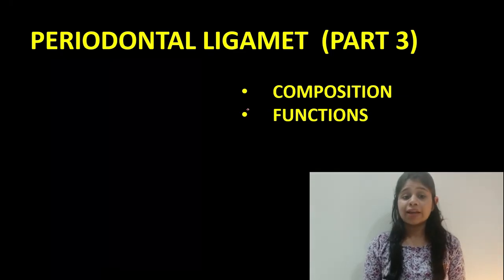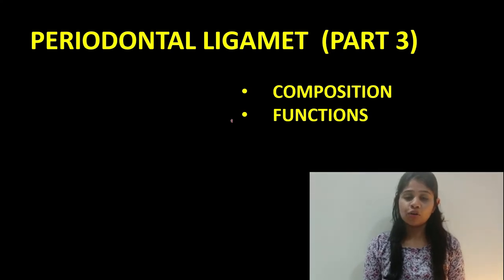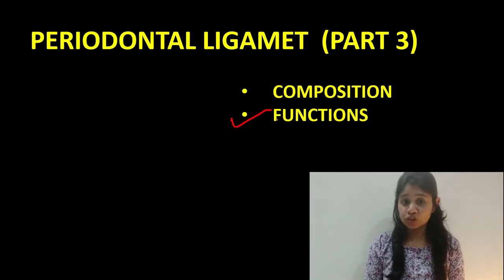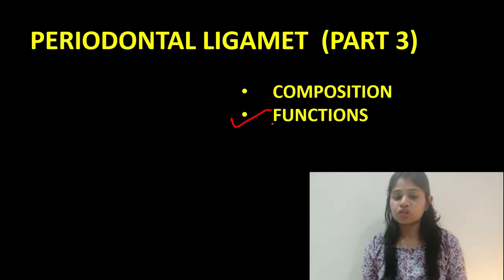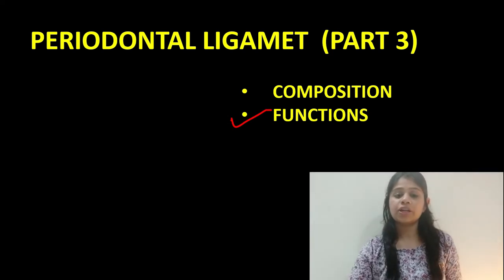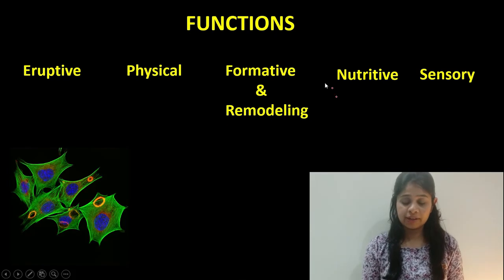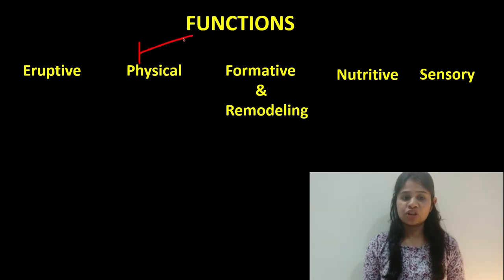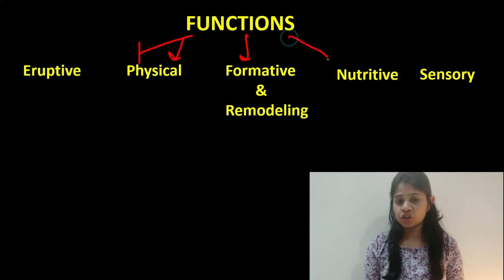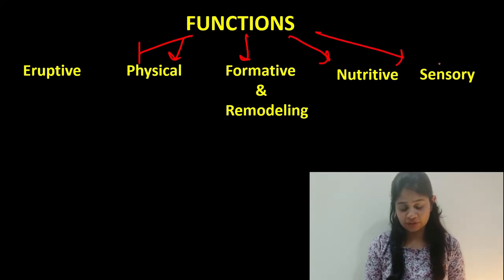We now move to the second part of our discussion: the functions of the periodontal ligament. The functions can be broadly put into five categories: the eruptive function, the physical function, the formative and remodeling function, the nutritive function, and the sensory function.